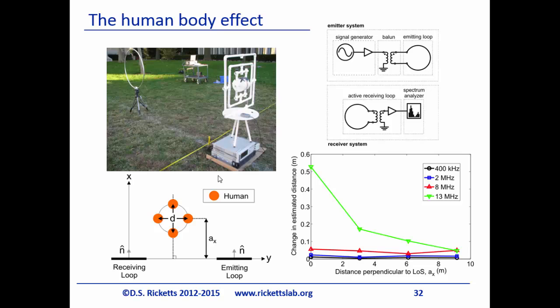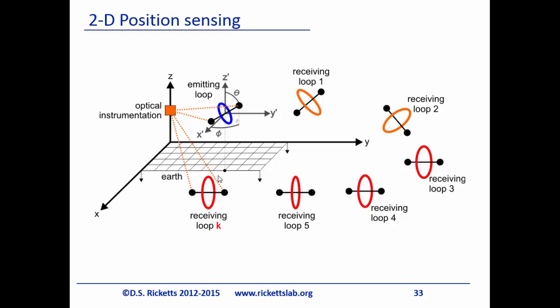We then looked at the human body effect. We took four people and moved them between two loops, measuring the change in apparent distance. We found that between about 200 kilohertz and 2 megahertz there really is no effect — the human body is transparent at those frequencies. At 13 megahertz the body starts to absorb. This is important because RFID operates starting at 13.56 MHz and UHF is even higher — so the human body blocks those signals, while ours at 350 kHz passes right through.